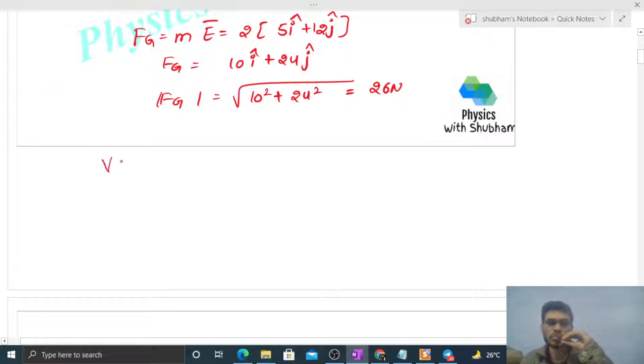We want to find potential as a function of x,y. dV is nothing but minus E dot dr. In 2D, dr will be dx i-cap + dy j-cap. So dV = -(5i-cap + 12j-cap)·(dx i-cap + dy j-cap).